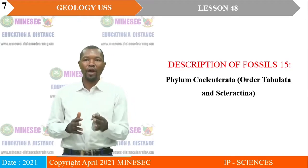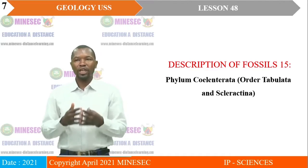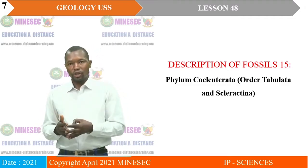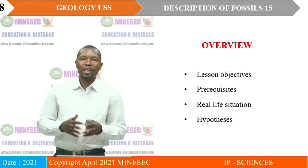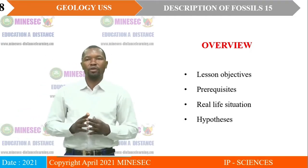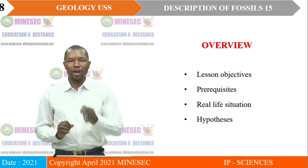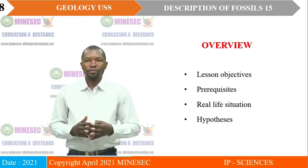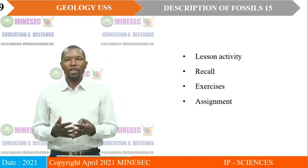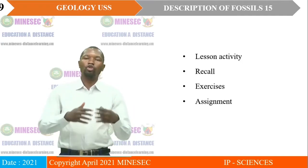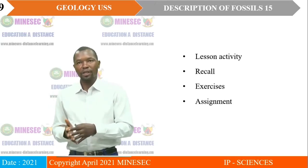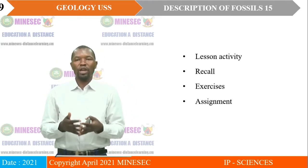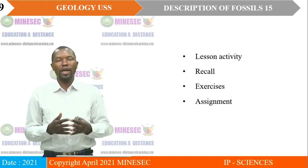We still have to concentrate on phylum Coelenterata. We shall treat the orders Tabulata and Scleractina. This will mark the end of description as well as our topic of discussion. In our lesson overview, look at the objectives of our lesson, look at the prerequisites — that is, essential and vital information required to better appropriate real-life situations — look at the hypothesis, as well as the lesson activity. Then we will have a recall, some exercises, and we shall end our lesson with an assignment.